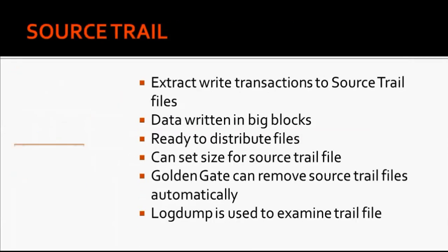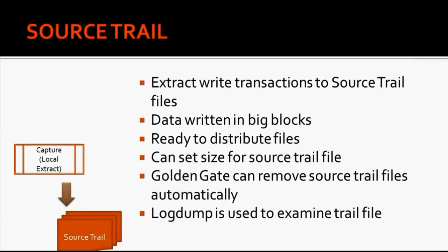The next component is the source trail. The extract process writes all captured transactions to a staging file known as the source trail file. Data in the source trail file is written in big blocks to improve performance, and once the source trail file is created, it is ready to be distributed to target servers. You can set a size for source trail files, and when the size is exceeded, a new trail file will be created.